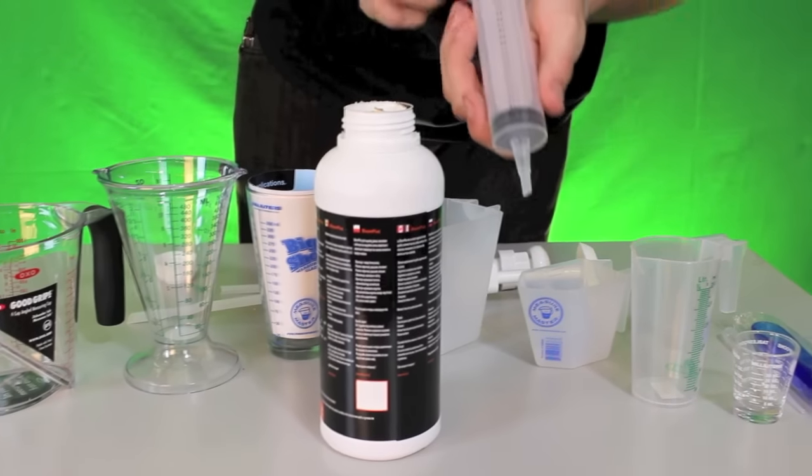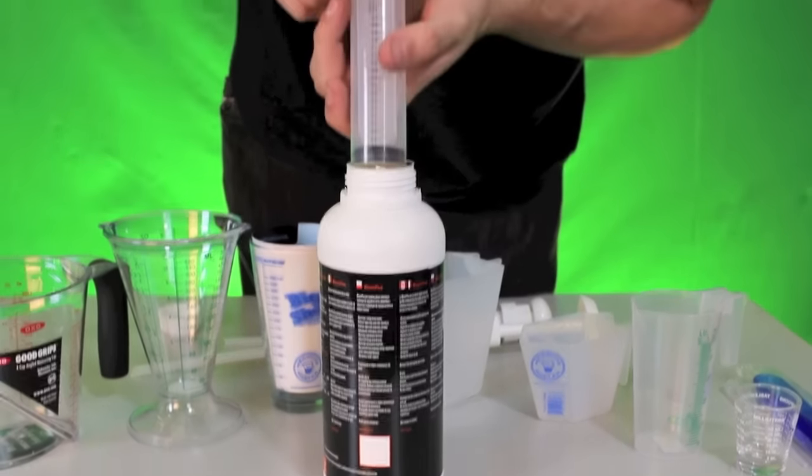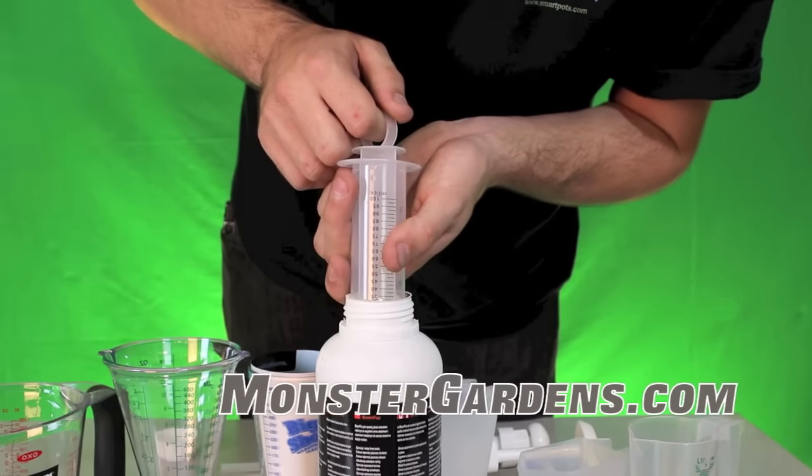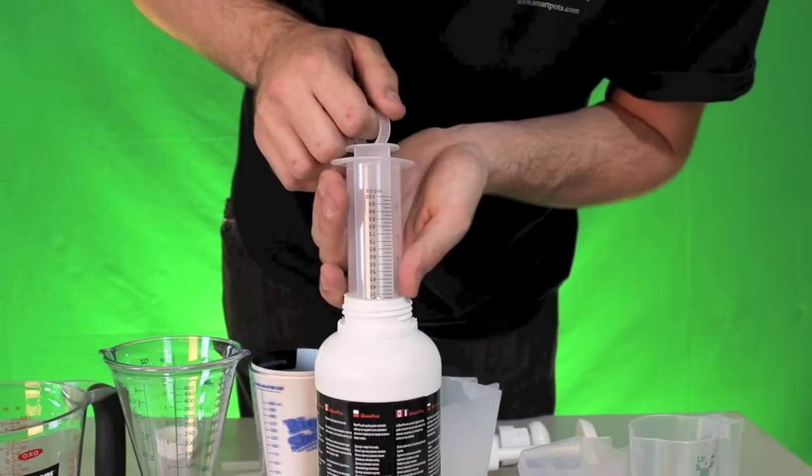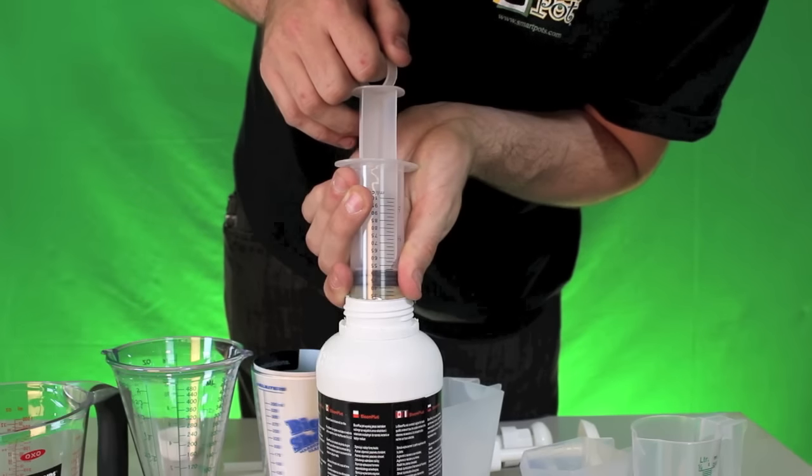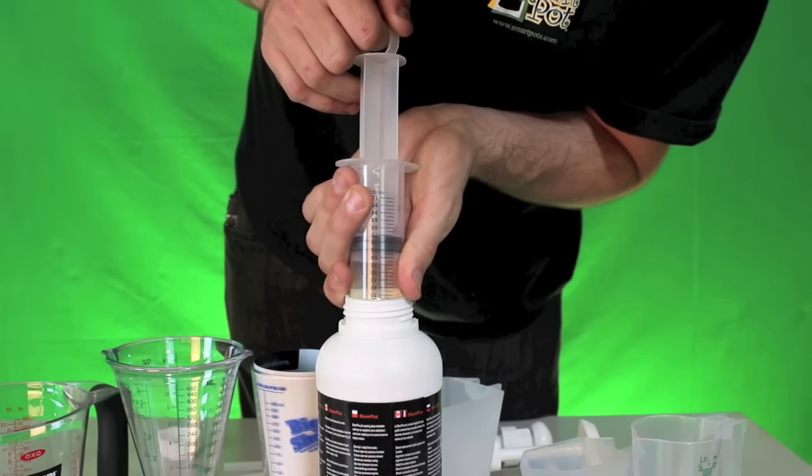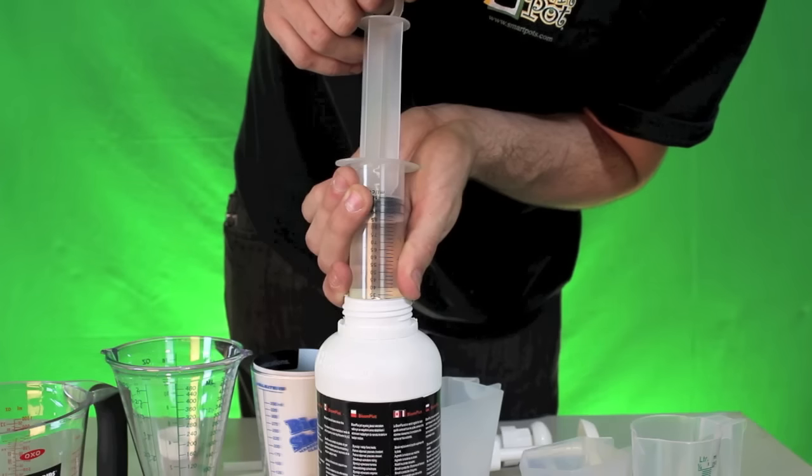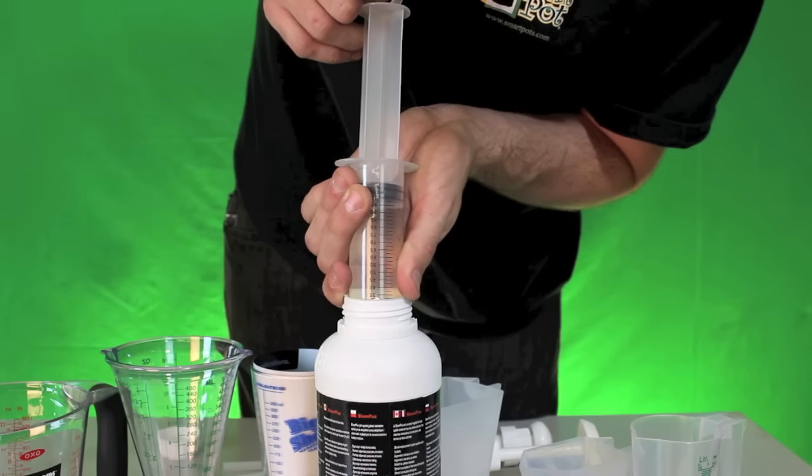So this is going to be a demonstration of how the syringe works. What you're going to do is you're going to simply put the syringe end into the solution and just simply pull until you have your desired amount of liquid reached. So for just for example purposes, I'll just go to the maximum and I'll go to 100 milliliters.